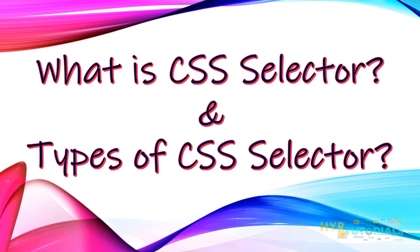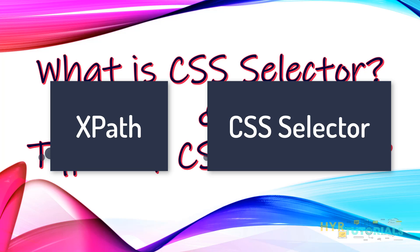But what if you are not able to identify that unique element? Then we have to combine multiple properties, or we have to take the help of another element — based on another element's reference, we have to find out this element. In those cases, we basically go for two types of locators: XPath and CSS selector.